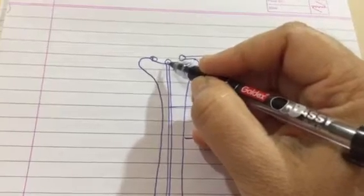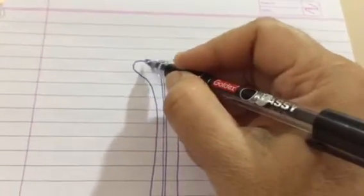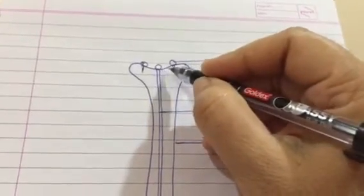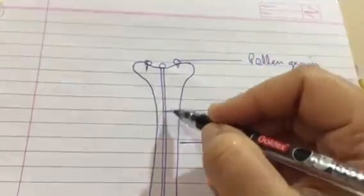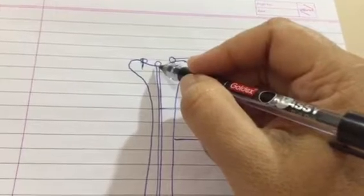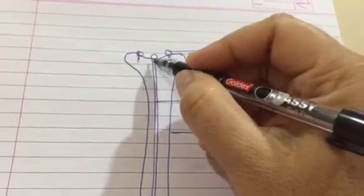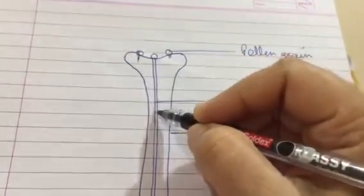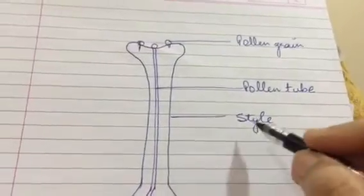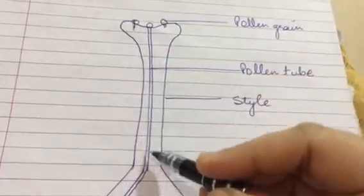Almost all the pollen grains would be originating a pollen tube. However all of the pollen tubes would not be able to travel through. One or two pollen grains might have that significant energy to produce a pollen tube which is able to transfer itself through the style.